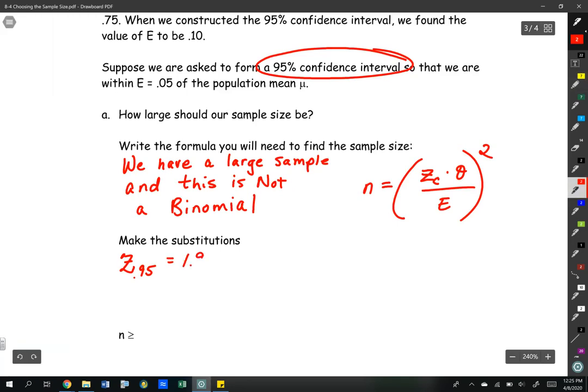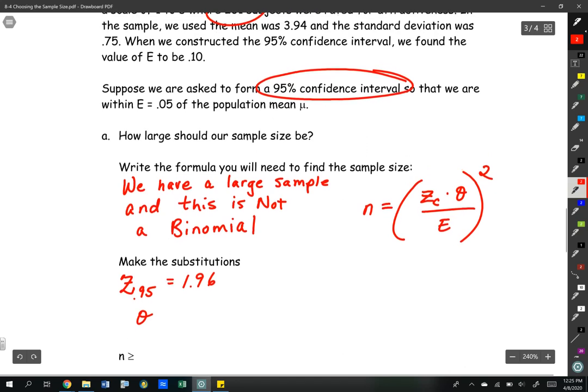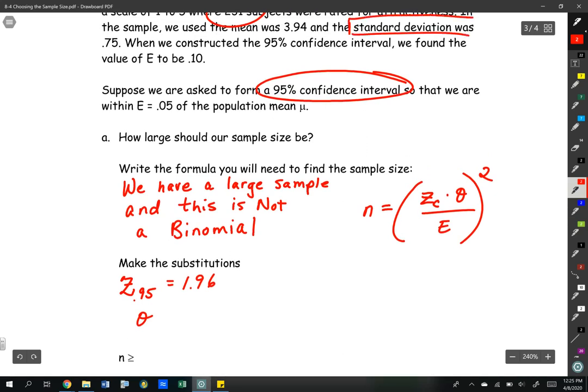We need to know what our standard deviation is, and that was given right here. The standard deviation was 0.75. And we need to know what E is. Within is a key word where you're finding E. Within 0.05, E is 0.05. So n is going to be equal to our z score 1.96 times our standard deviation.